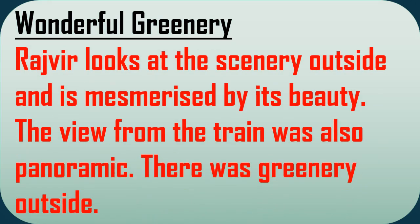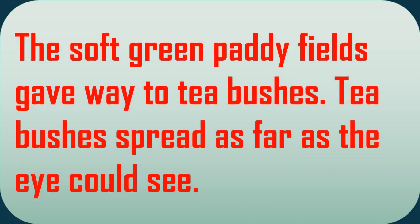Next heading: Wonderful Greenery. Rajveer looks at the scenery outside and is mesmerized — fascinated and attracted by its beauty. The view from the train was panoramic. The soft green paddy fields gave way to tea bushes that spread as far as the eye could see. That was really a magnificent view. There were tea bushes and tea plants outside, and also a building with smoke coming out of chimneys — it was a tea garden. Assam is called a tea country.